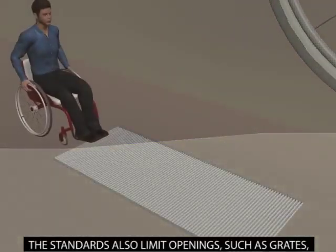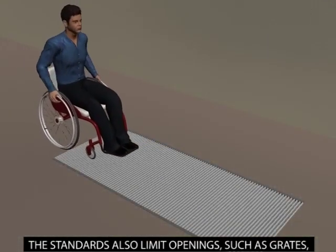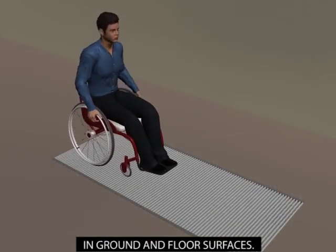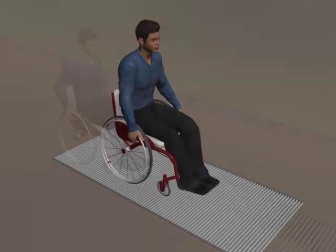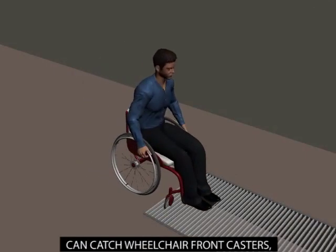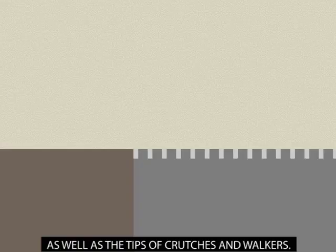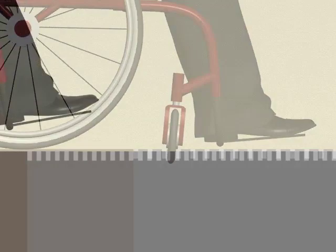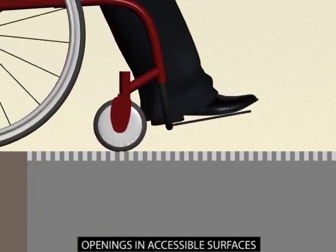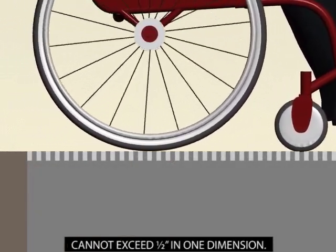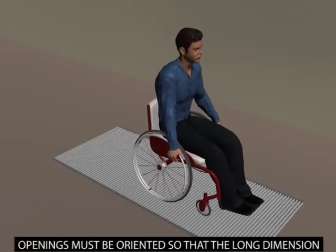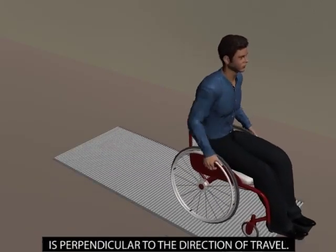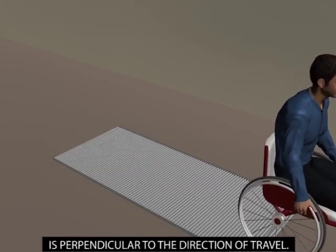The standards also limit openings such as grates in ground and floor surfaces. Surface openings that are too wide can catch wheelchair front casters as well as the tips of crutches and walkers. Openings in accessible surfaces cannot exceed half an inch in one dimension. Openings must be oriented so that the long dimension is perpendicular to the direction of travel.